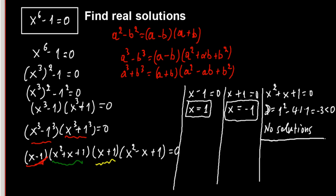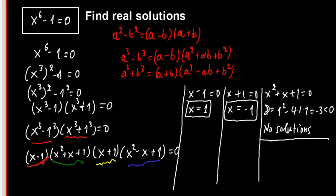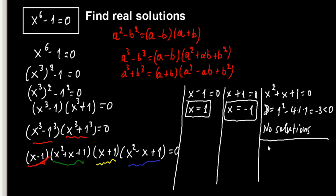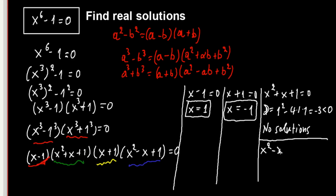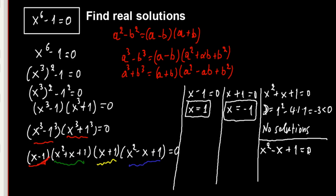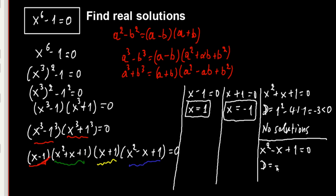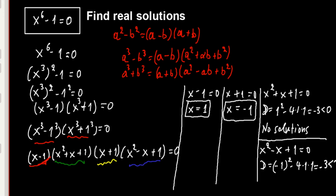And if we take the other quadratic, x² minus x plus 1 equals to 0, the discriminant is (-1)² minus 4 times 1 times 1, which equals minus 3 again — it is less than 0, so here we have no real solutions either. So we found that our only solutions are x equals 1 and x equals minus 1.